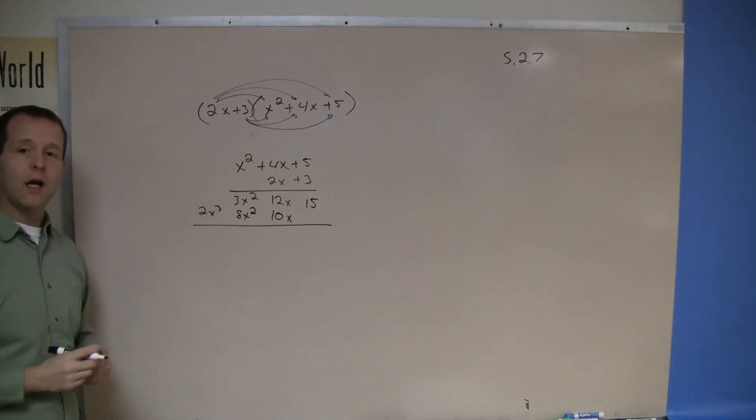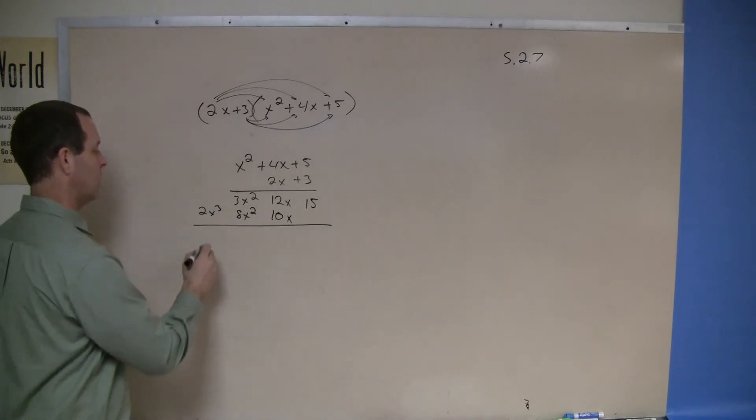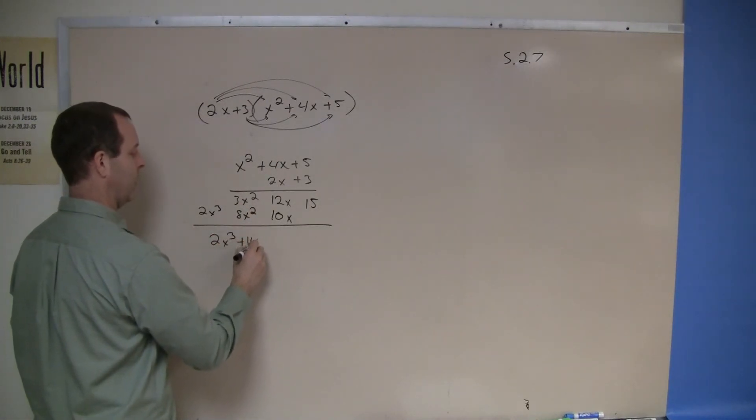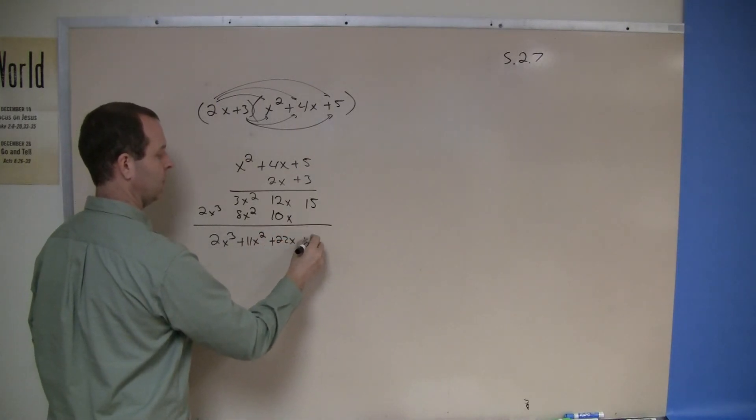Draw my line, then add vertically or collect the like terms. So 2x cubed plus 11x squared plus 22x plus 15.